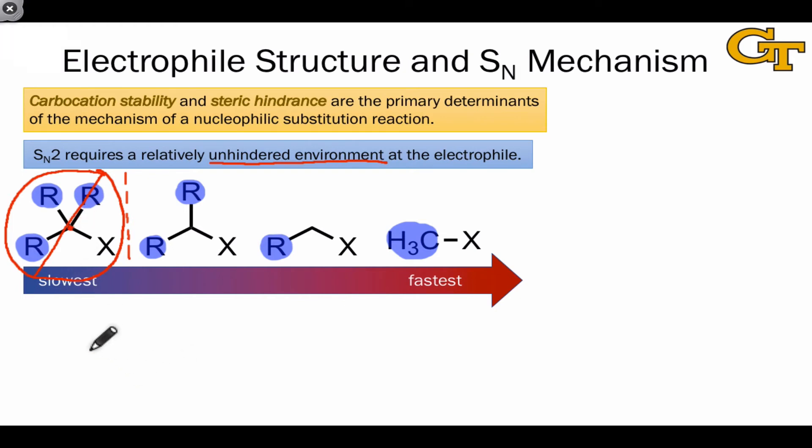Another situation that's worth mentioning is that certain types of primary substrates are also unreactive in SN2 reactions. If the carbon adjacent to the carbon bearing the leaving group is a tertiary carbon itself. This is referred to as a neopentyl situation since the five carbons implied here form what's called a neopentyl group.